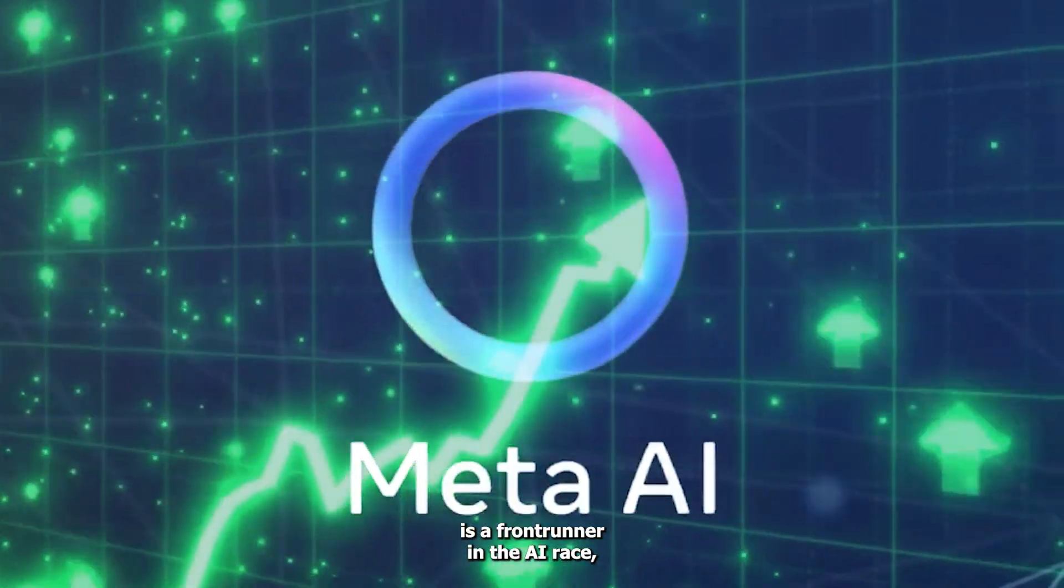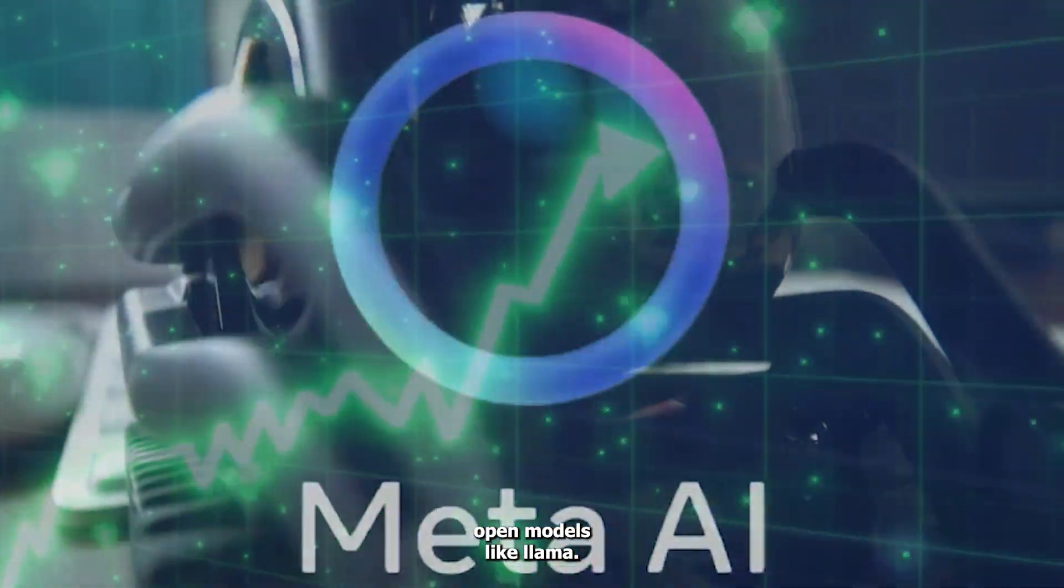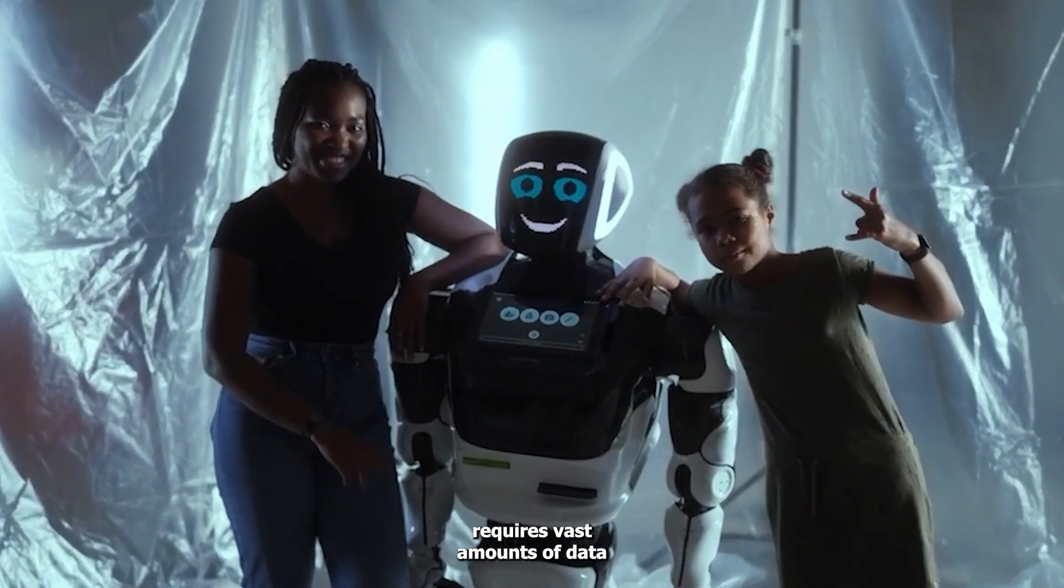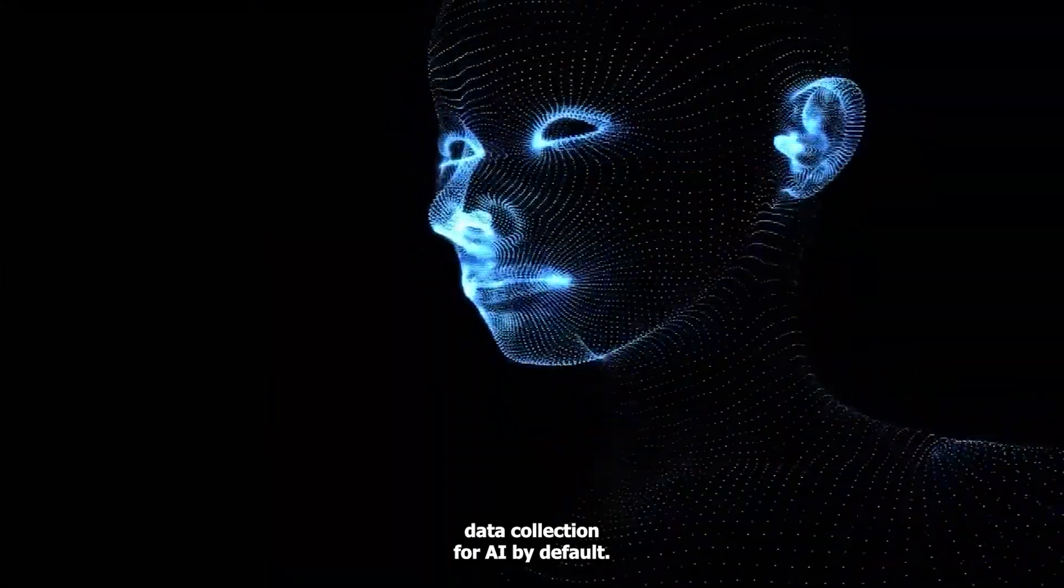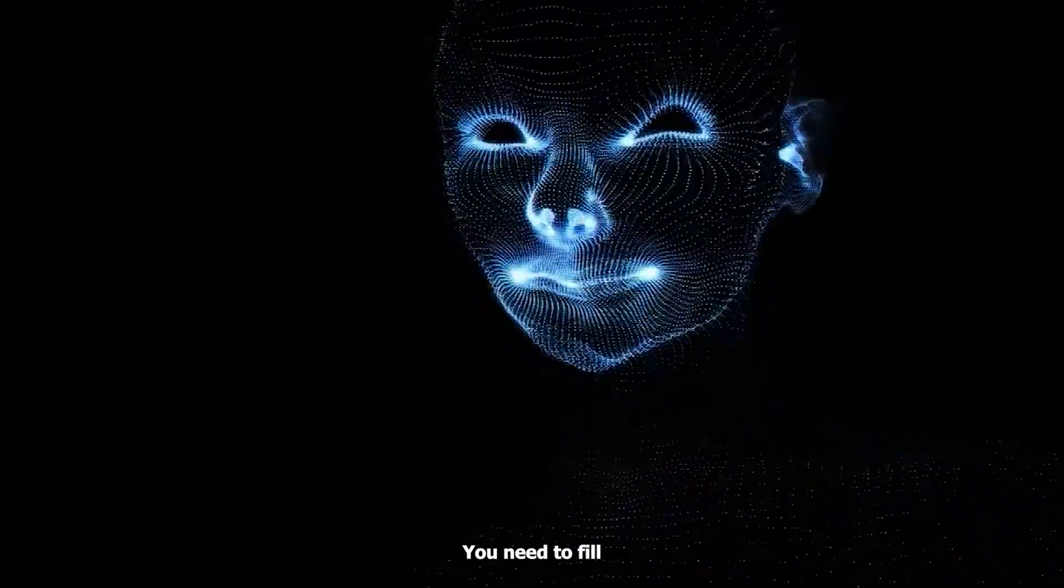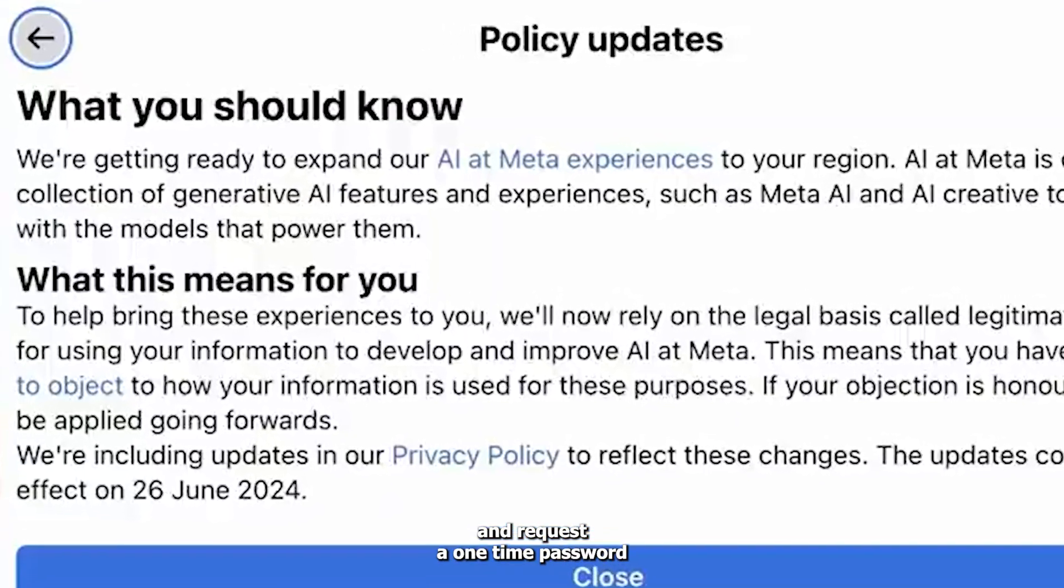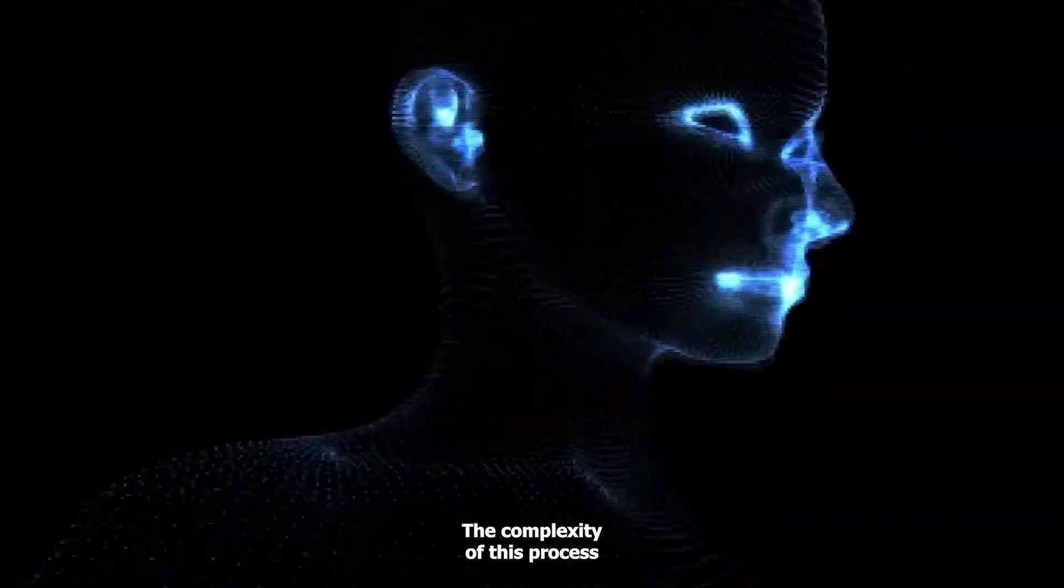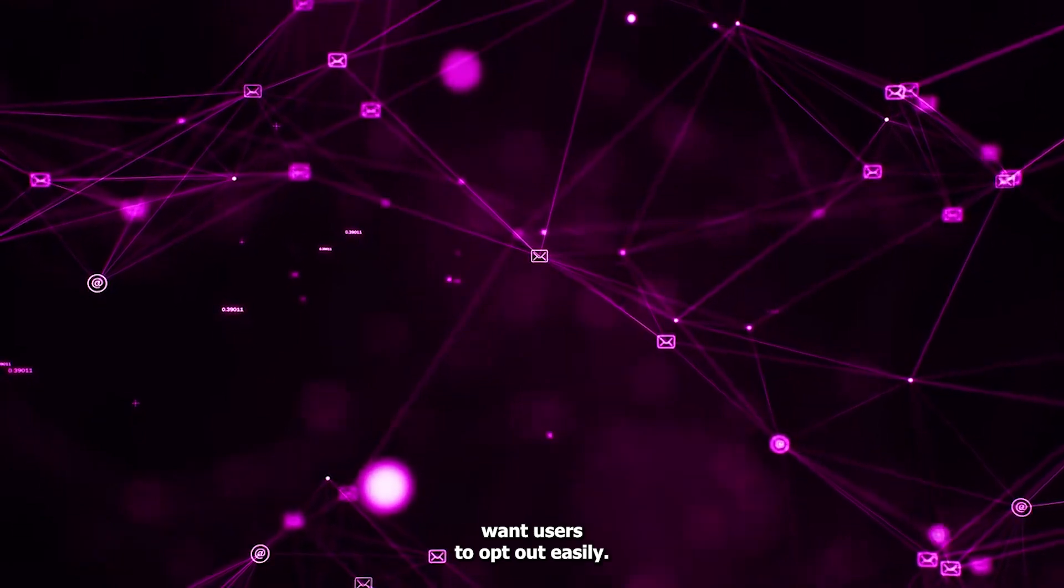Meta. This tech giant is a frontrunner in the AI race, offering impressive open models like Llama. However, training these models requires vast amounts of data, and Meta's solution is to enable data collection for AI by default. The opt-out process is intentionally convoluted. You need to fill out a detailed form, provide a written explanation, and request a one-time password to submit your request.